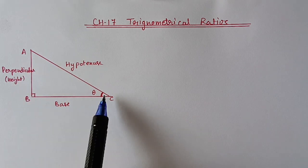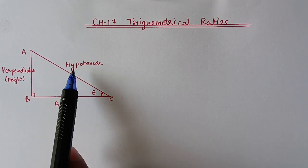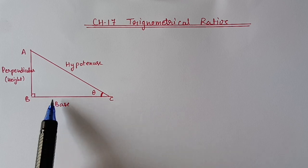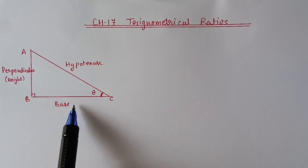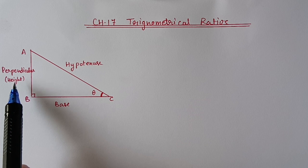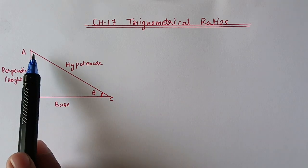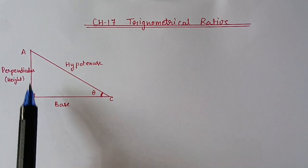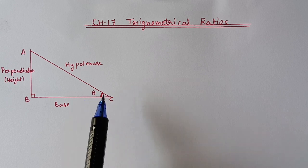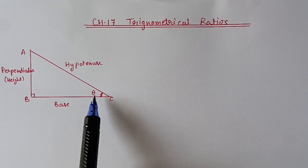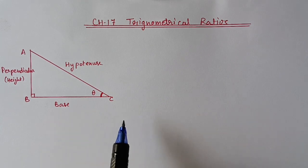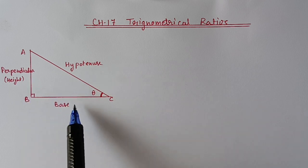We have three sides. The side opposite to 90 degrees we call the hypotenuse. If I am talking about angle C, then BC is the base or adjacent side, and the side opposite to this angle will be the perpendicular, height, or altitude. If I am talking about angle A, then AB is the base and BC will be the height. When choosing base and height, see the angle you are referring to — base means the adjacent side and height means the opposite side of the angle.